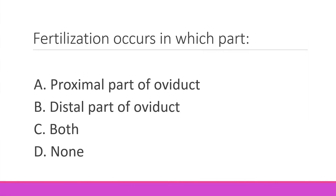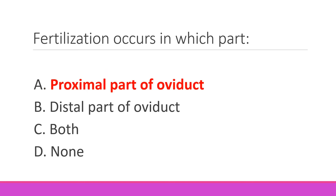Fertilization occurs in which part? The oviduct has three parts — the proximal part is the ampulla. Fertilization basically occurs in the ampulla. So alpha is the right option.